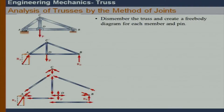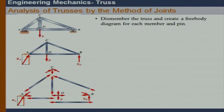Now, how do we analyze a truss? A truss is an assemblage of triangles supported by hinge or roller connections. There are two methods we are going to use: the first is the method of joints, and the second is the method of sections.